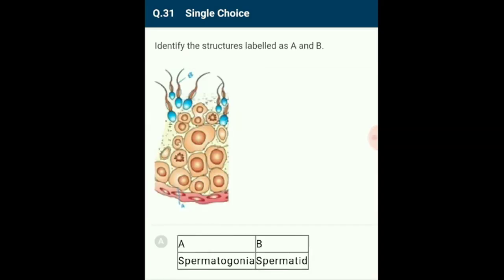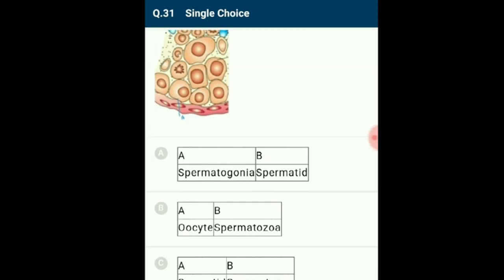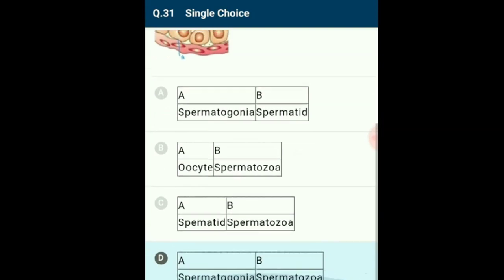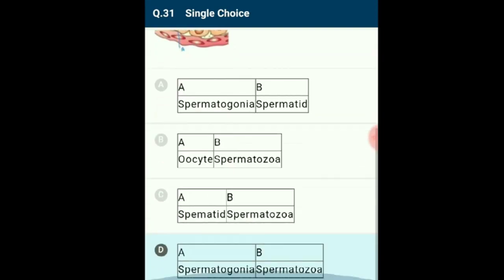Question 31: Identify the structures labeled A and B from the diagrammatic representation. Spermatogonia are present on the inside wall of seminiferous tubules and increase in number by mitotic divisions. Each spermatogonium is diploid and contains 46 chromosomes. Primary spermatocytes undergo meiotic divisions to form secondary spermatocytes, which divide meiotically to give rise to haploid spermatids, transforming into spermatozoa by spermatogenesis. A is labeled spermatogonia and B is labeled spermatozoa. The correct option is D.